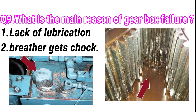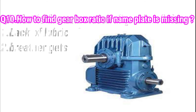The next question: what is the main reason for gearbox failure? In most cases, a gearbox fails due to lack of lubrication, where metal-to-metal contact increases as lubrication inside the gearbox is reduced, causing wear and tear of metal parts and resulting in gearbox failure. The second reason is when the breather gets choked — in a dusty environment, the breather on the gearbox casing gets choked, causing a buildup of temperature and pressure inside the gearbox, damaging the seal between the casing and the shaft, leading to gear oil leakage and eventually gearbox failure.